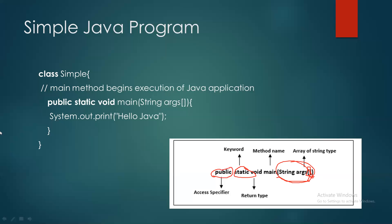جب بھی Java کا program execute کرنا ہے تو main کے function کے لیے یہ پوری line لکھنی ہوگی: public static void main(String[] args)۔ یہ method ہمیشہ class کے اندر آئے گا۔ C++ کی طرح directly main function نہیں لکھ سکتے — Java میں ہمیشہ پہلے class start کرنی ہے، class کا نام لکھنا ہے، اور اس کے اندر main کا function آئے گا۔ Program میں ہمیشہ صرف ایک ہی main function ہوتا ہے۔